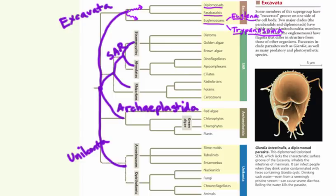Leaving the excavata behind, we'll consider the SAR supergroup consisting of three subclades: the stramenopiles, the alveolata, and the rhizaria. The stramenopiles include photosynthetic and non-photosynthetic, microscopic unicellular, and macroscopic multicellular forms, and thus carry on the tradition of having dissimilar lifeforms clustered into the same taxon.